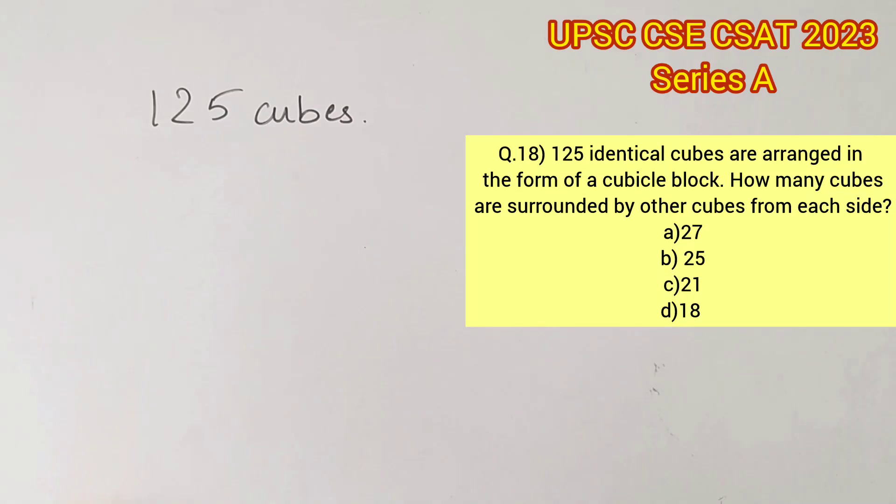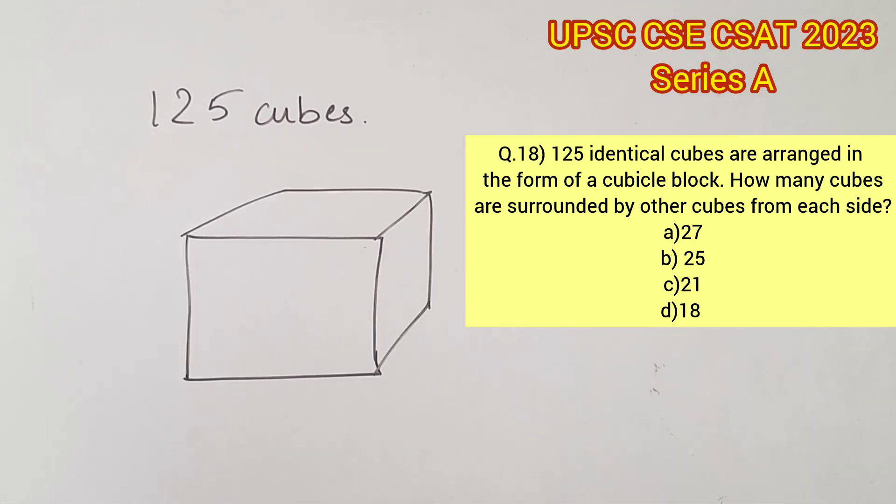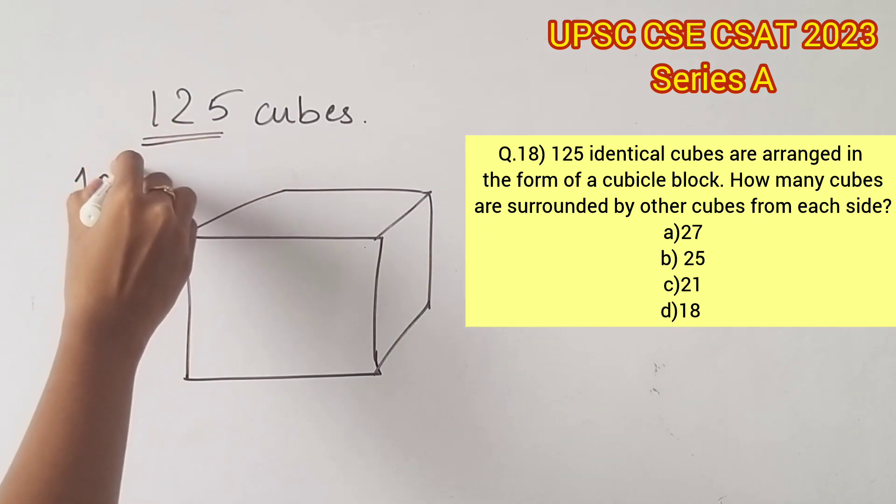Welcome to Aptitude Destination. Please pause the video and read the question completely. 125 identical cubes are arranged in the form of a cubical block. Since they have said 125 identical cubes, let's consider each cube has a volume of 1 meter cube.